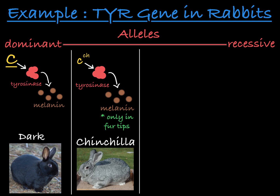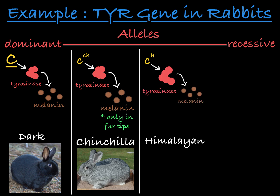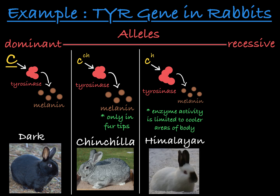The next allele in the series of dominance is CH, which we call the Himalayan allele. This allele produces a temperature-sensitive version of the tyrosinase enzyme that only works at temperatures below about 25 degrees Celsius. The only areas of a rabbit's body at that temperature are the extremities, like the ears, nose, and feet. So only in those areas will the tyrosinase work to create melanin, making those areas dark. In the core of the body, where this temperature-sensitive tyrosinase doesn't work, it won't be making melanin. A rabbit that is homozygous for this Himalayan allele will have a dark face, ears, and feet, but a white core body.